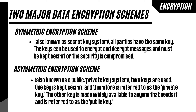There are two major data encryption schemes. With a symmetric key system, also known as a secret key system, all parties have the same key. The keys can be used to encrypt and decrypt messages and must be kept secret or the security is compromised. For the parties to get the same key, there must be a way to securely distribute the keys. While this can be done, the security controls needed can make this system impractical for widespread and commercial use on an open network like the internet.